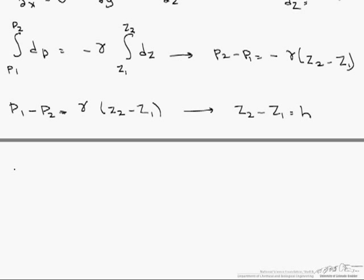And now we can write this as p1 minus p2 equals the specific weight times the height. And we can use this equation for a number of different situations including the manometer equation as well as hydrostatic forces on a submerged surface.